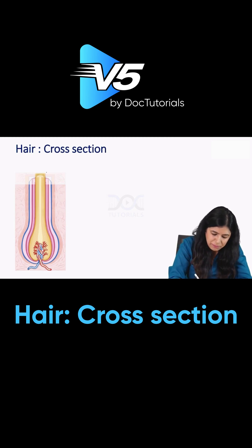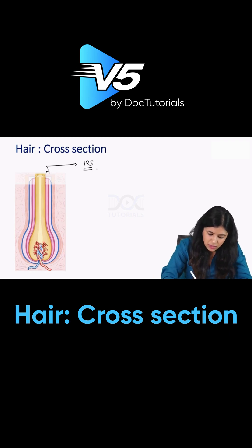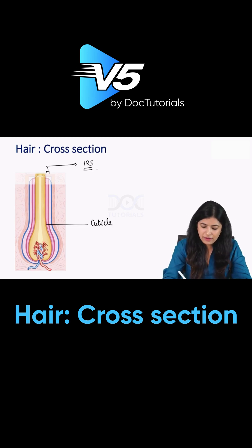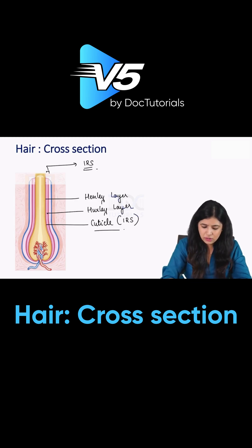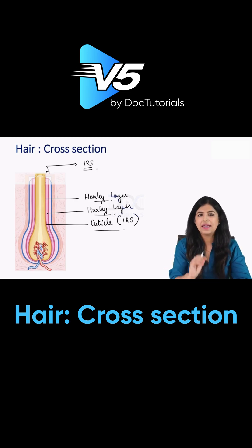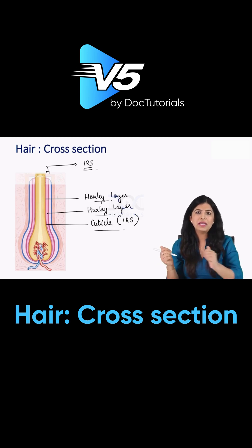Now talking about this pink colored membrane here, which is the inner root sheet. The inner root sheet also has three layers, and these layers are important to remember. From innermost, there is the cuticle — yes, the cuticle is part of the hair shaft, but we also have a cuticle layer in the inner root sheet. Then there is the Huxley layer and the Henle layer. The cuticle of the inner root sheet is entangled with the cuticle of the hair shaft, and together it binds the hair shaft to the layers.